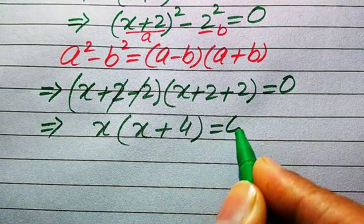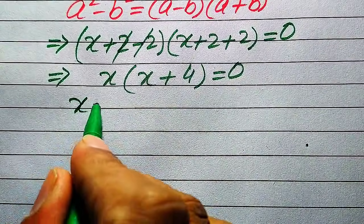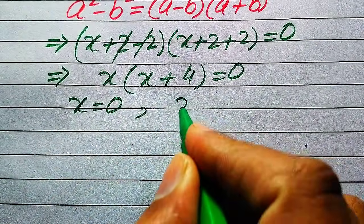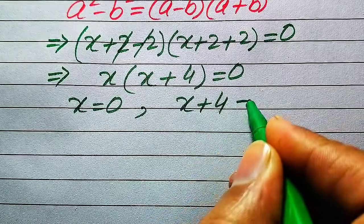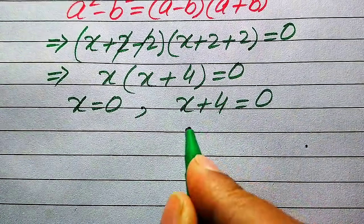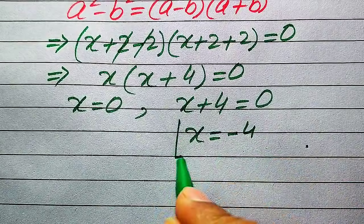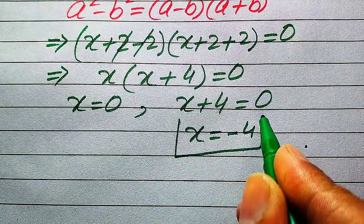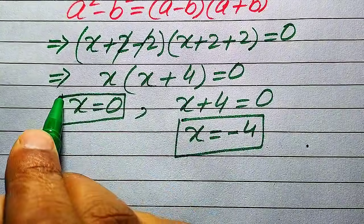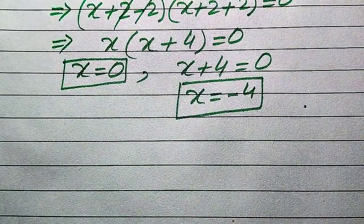We divide this into two cases. The first case gives x = 0, and the second case gives x + 4 = 0, so x = −4. These are the two real roots of the given equation from the first method.